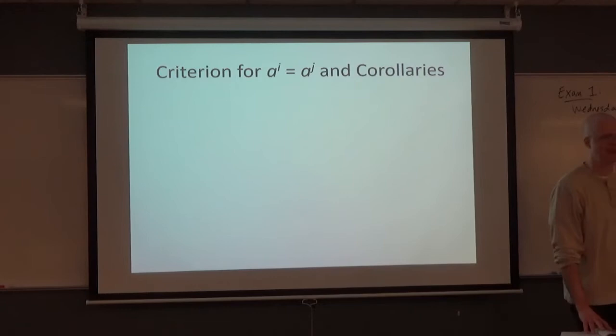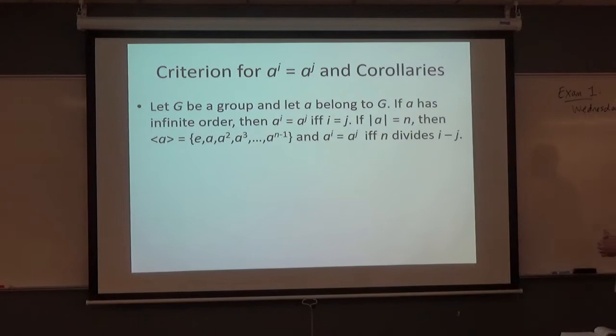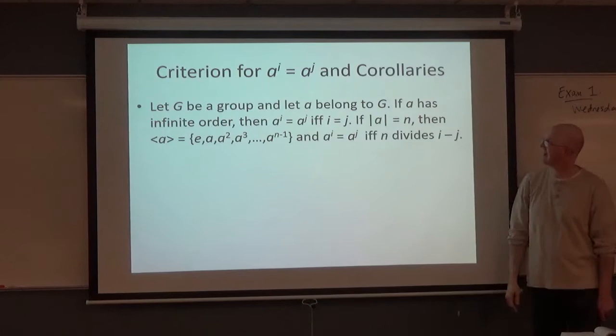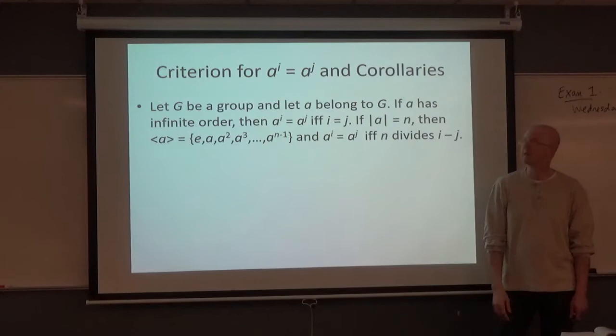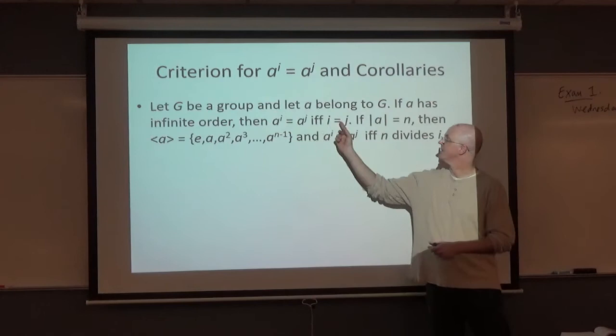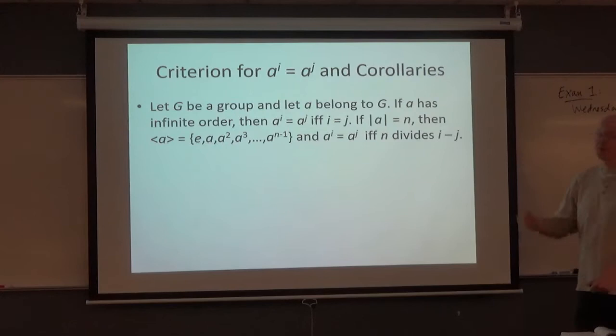In the PowerPoints here, I've written down the main theorems in Chapter 4. So, technically speaking, you probably don't have to rewrite these. But, you may want to just to start to try to memorize them. There's this criterion for a^i equal a^j. It's kind of a long theorem statement. Here it is. Maybe it's not too bad. Let G be a group and let a belong to G. If a has infinite order, then the only way a^i is going to equal a^j is if i equals j. IFF, again, means if and only if. So, in the case where a has infinite order, you consider powers of that a. They're only going to equal each other if and only if the powers themselves are the same.